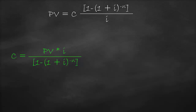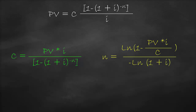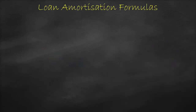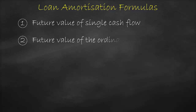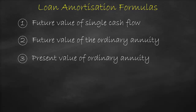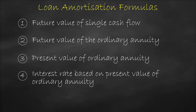We can also rearrange the present value of the ordinary annuity formula to get the number of periods N. The number of periods equals the natural log of [1 minus (present value times the interest rate divided by the equivalent cash flow)], divided by the natural log of (1 plus the interest rate). In summary, to understand loan amortization, we need the future value of the single cash flow formula, the future value of the ordinary annuity formula, and the present value of the ordinary annuity formula, and we must be able to rearrange the present value formula to solve for the interest rate and the number of periods.